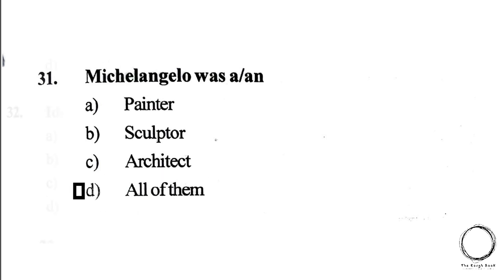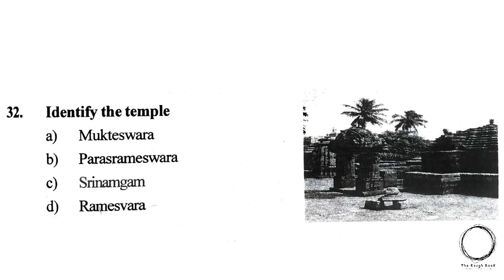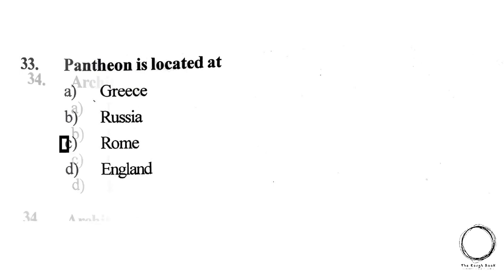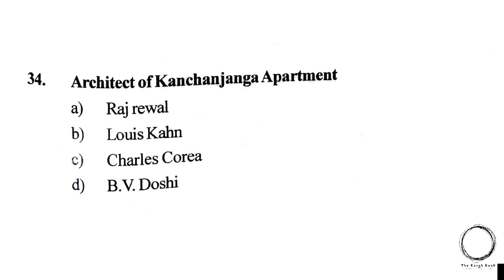Next question: Identify the temple — A) Mukteswar, B) Parasrameshwar, C) Srirangam, D) Rameshwar. The answer is A) Mukteswar. Next question: The Parthenon is located at — A) Greece, B) Russia, C) Rome, D) England. The answer is C) Rome.